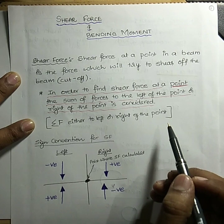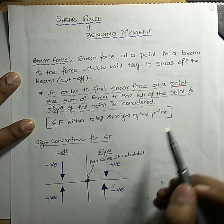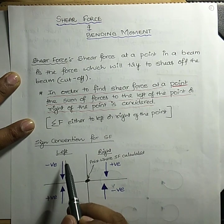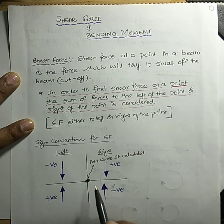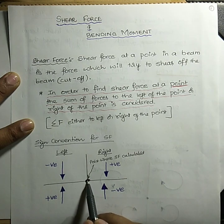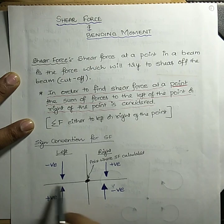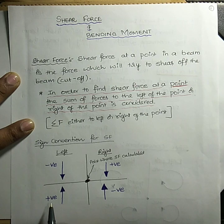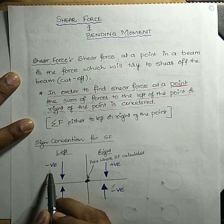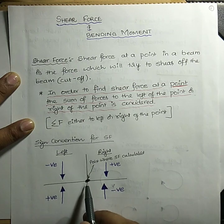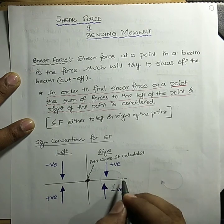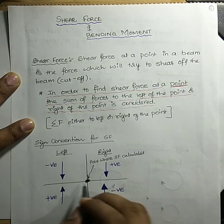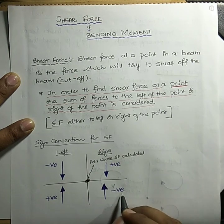When we consider that, we need to follow some sign conventions. For shear force: if we calculate towards the left hand side, left side upward force is taken as positive and left side downward force is taken as negative. Similarly, if we calculate towards the right hand side, right side downward is positive and right side upward is negative.